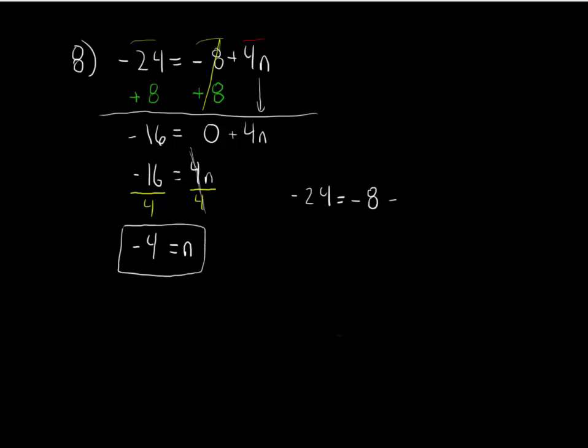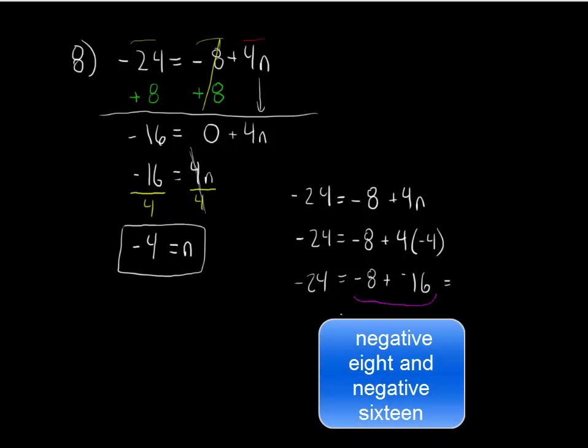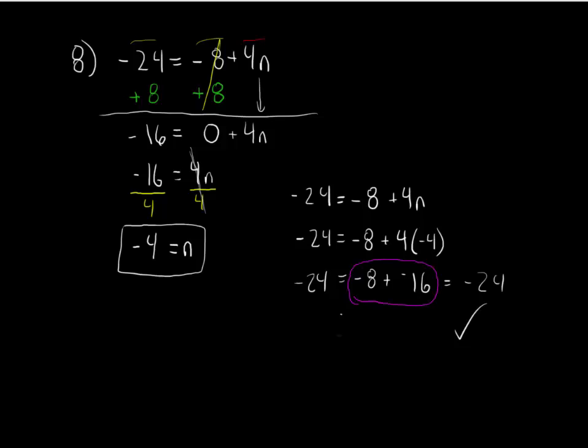We can check with substitution. If n is equal to negative 4, then everywhere in my equation that I see an n, I can rewrite with a negative 4 and solve. 4 times negative 4 is negative 16. Negative 8 and positive 16, when you put them together, equal negative 24. Our answer checks out.